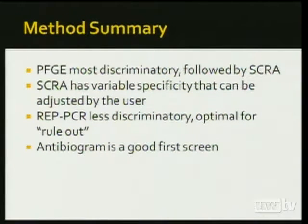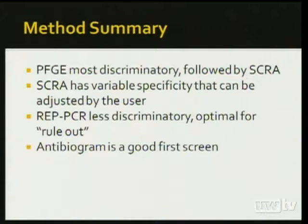The summary conclusions are consistent with some of what was found in the literature. Ultimately, pulse field is the more discriminatory method, potentially followed by SpectraCell — however SpectraCell has some variable specificity adjustable by the user, which we could potentially use to resolve differences. REP-PCR is overall less discriminatory and groups more things together, but works well for a rule-out scenario and is quite handy to use in the lab. The antibiogram remains a good first screening tool for strain typing.